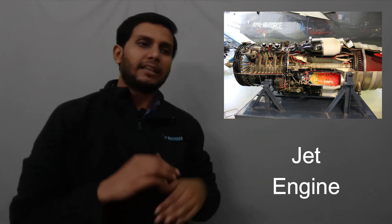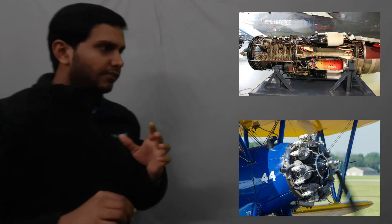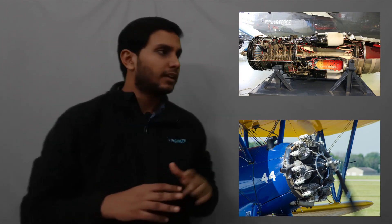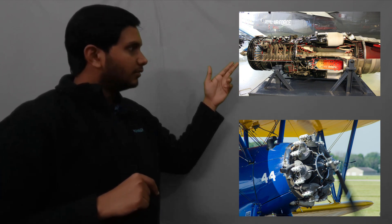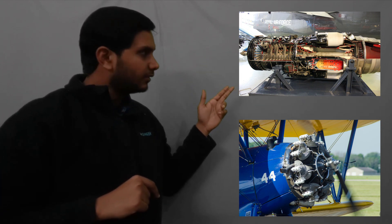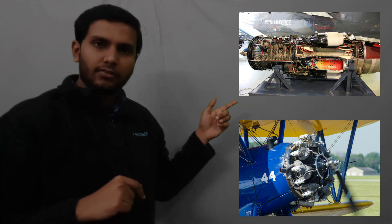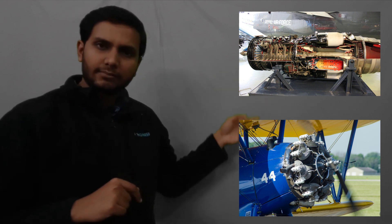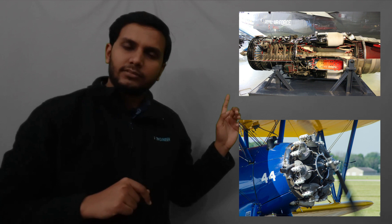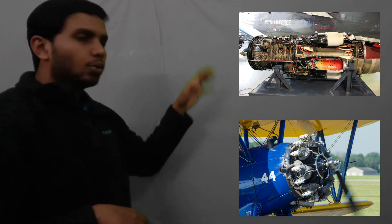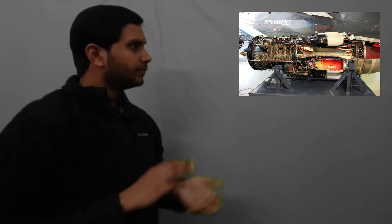The reciprocating piston engine works on the system of a piston-connecting rod mechanism, while the jet engine works on the gas turbine mechanism. Both have their own particular cycles of work. The major portion of the study of propulsion covers the various sections of the engine.